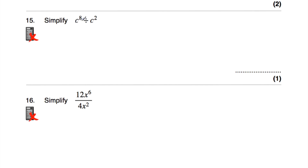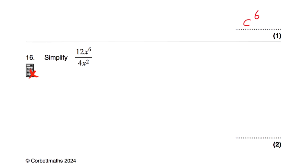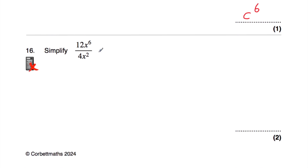Question number 15: simplify c⁸ divided by c². Same base, so subtract the powers: 8 minus 2 is 6. The answer is c⁶. Question number 16: simplify fully 12x⁶ divided by 4x². 12 divided by 4 is 3, and x⁶ divided by x² — subtract powers: 6 minus 2 is 4. The answer is 3x⁴.